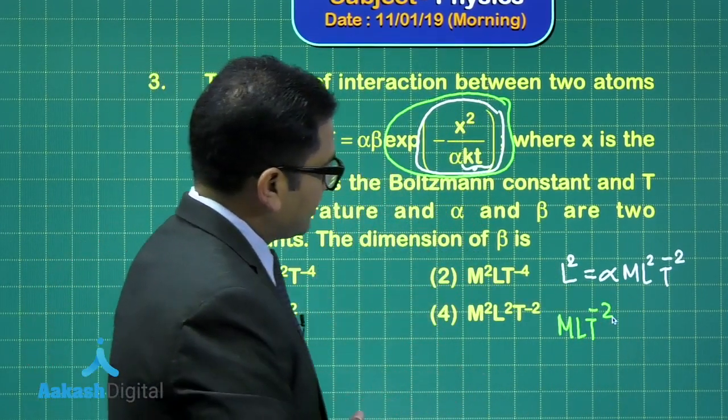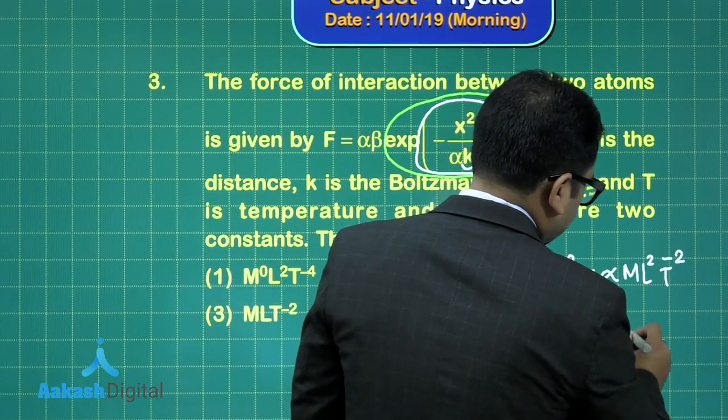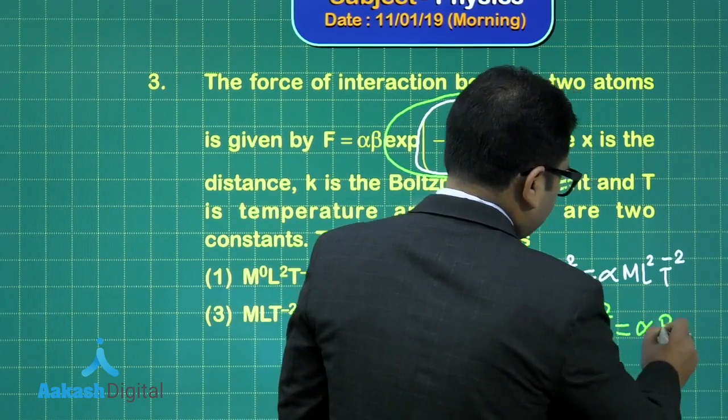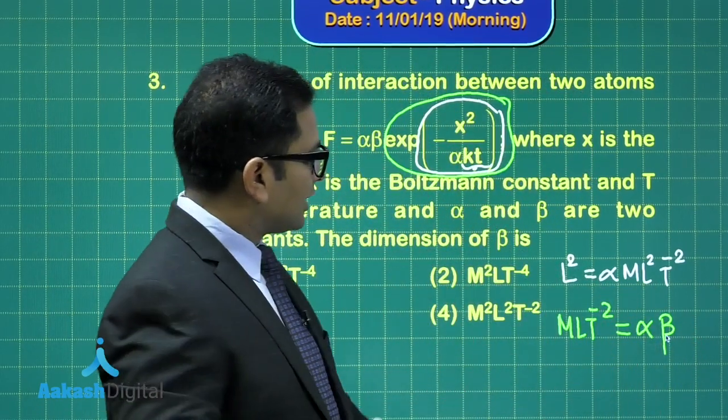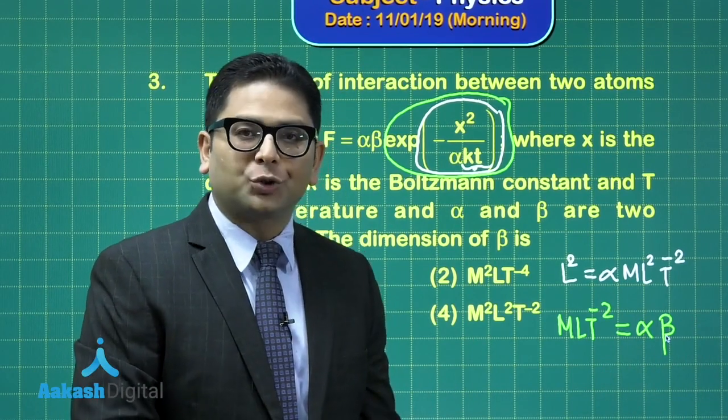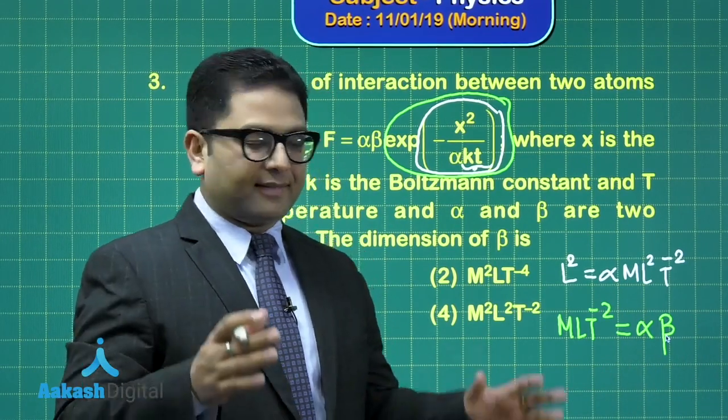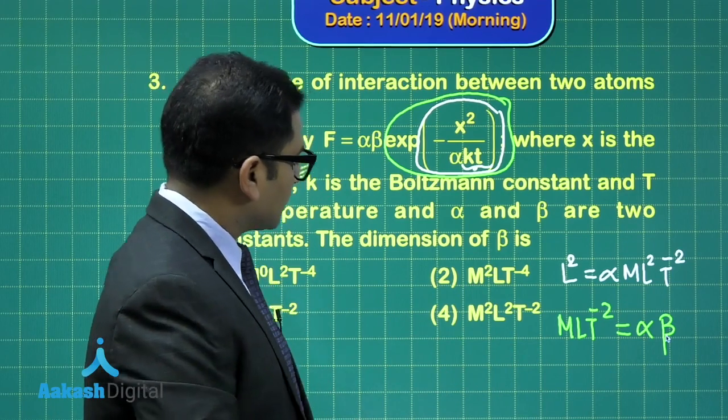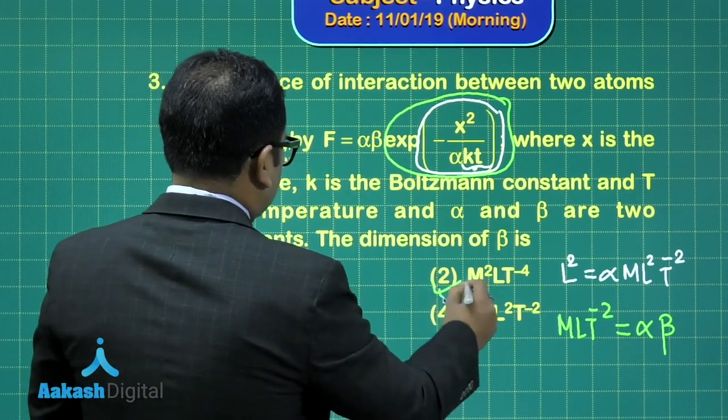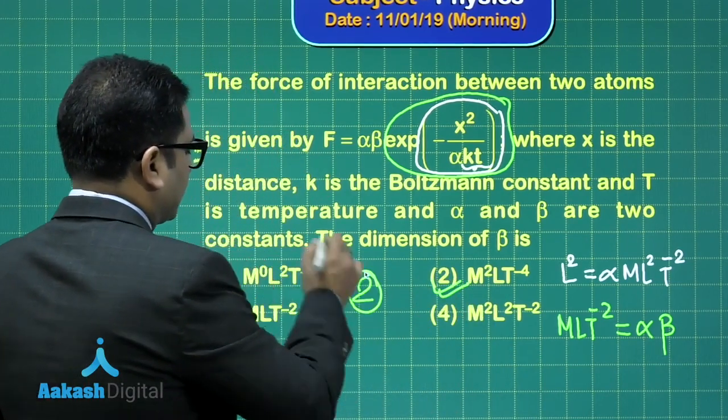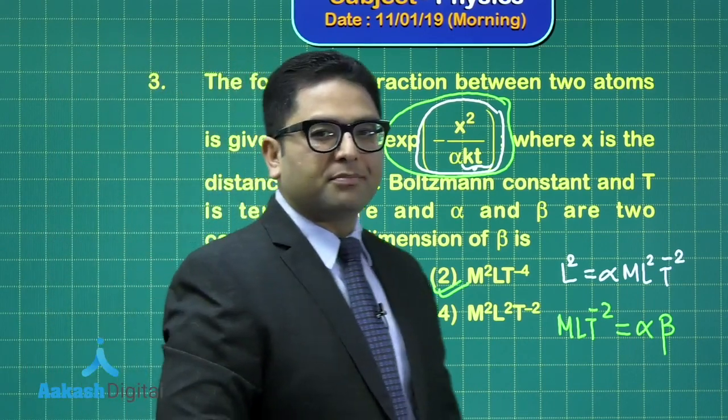So the second equation that I'm going to generate, M L T minus 2 is the dimension of force, right? And that dimension of force would be the dimension of alpha multiplied by beta. I hope these two equations are sufficient enough in order to get the dimension of beta and that gives us option number 2. So option number 2 would be the correct option for question number 3. Time to proceed to question number 4 now.